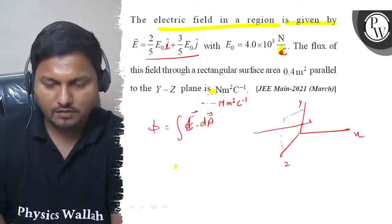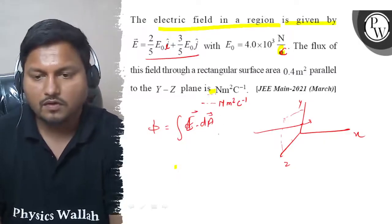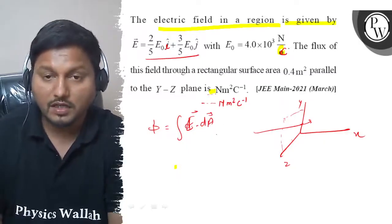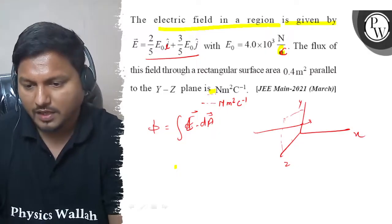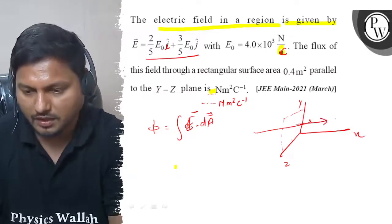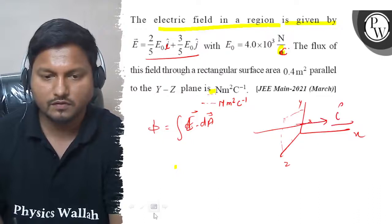We can write the area vector directly. We have the area vector of this surface in the direction of i, so we can write this area vector.